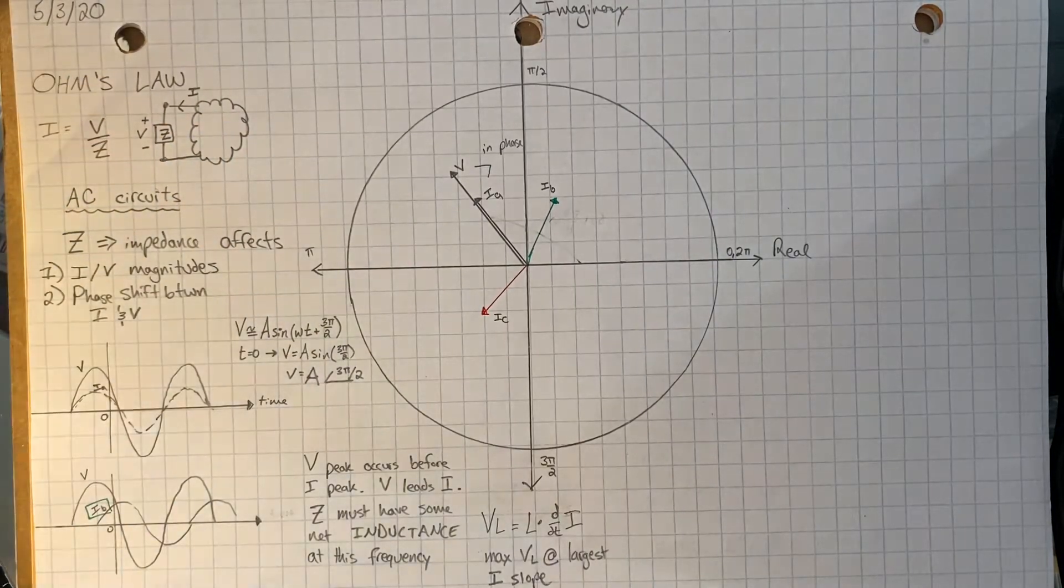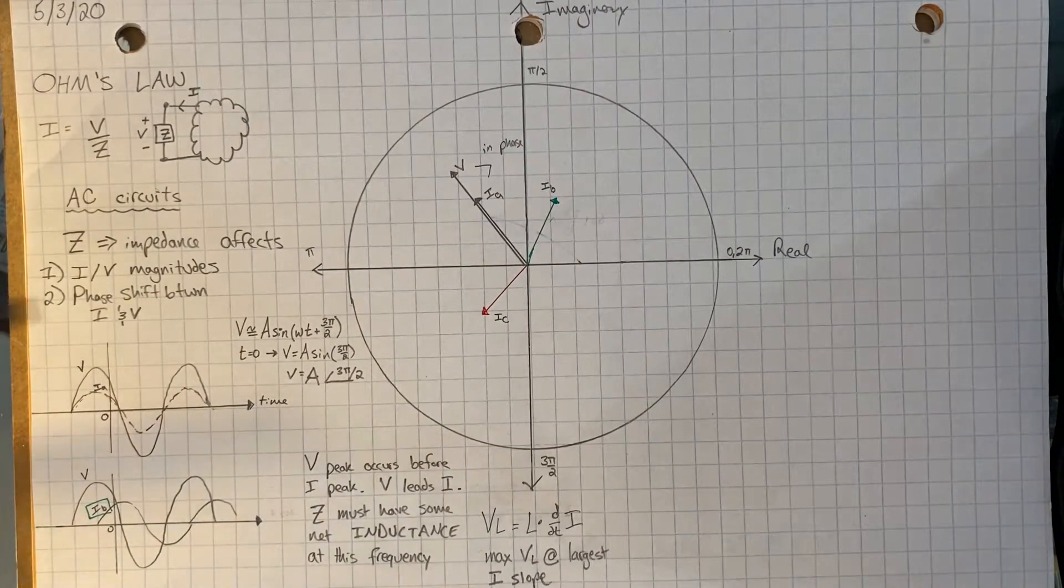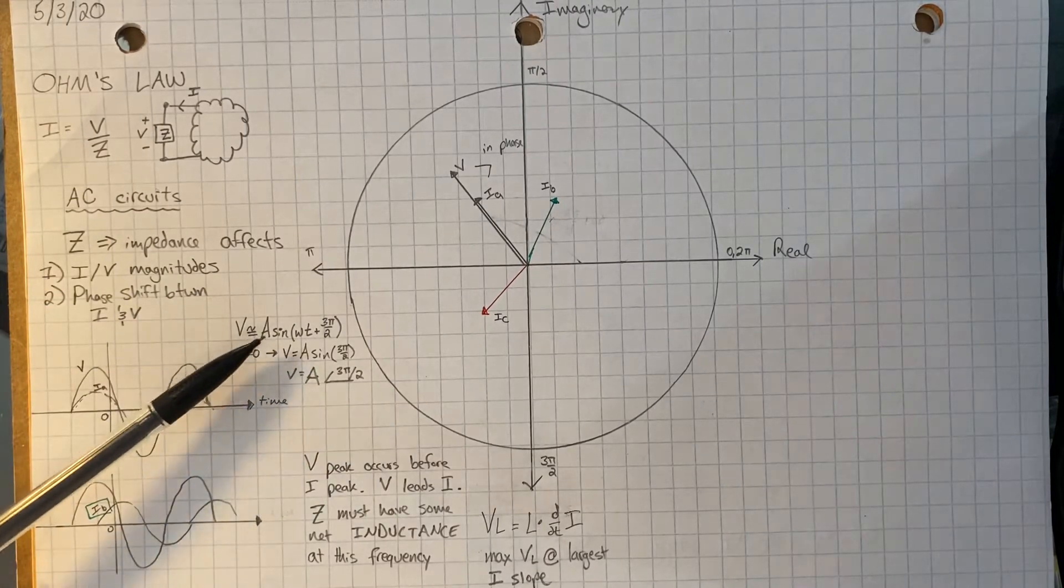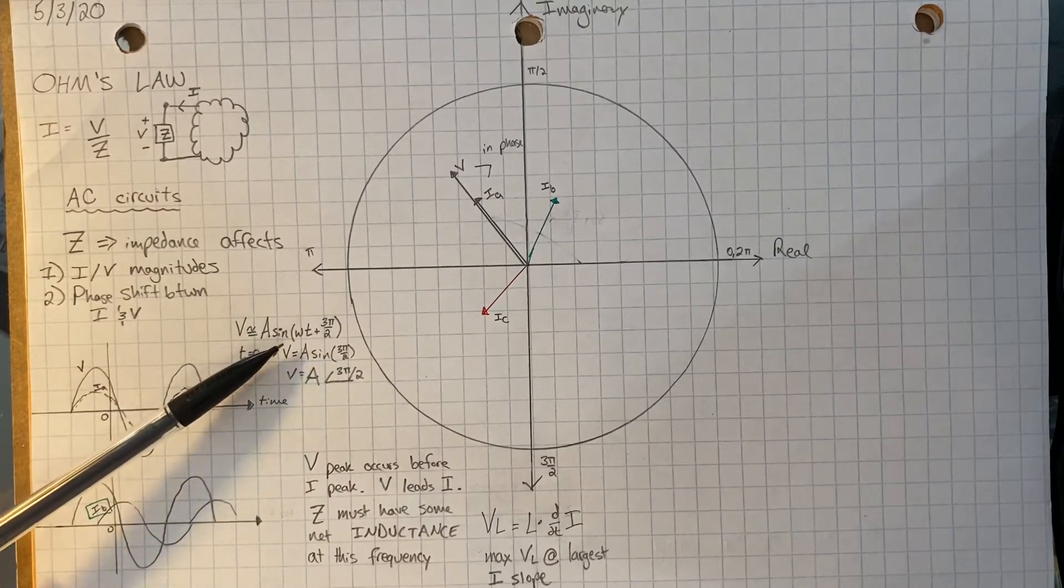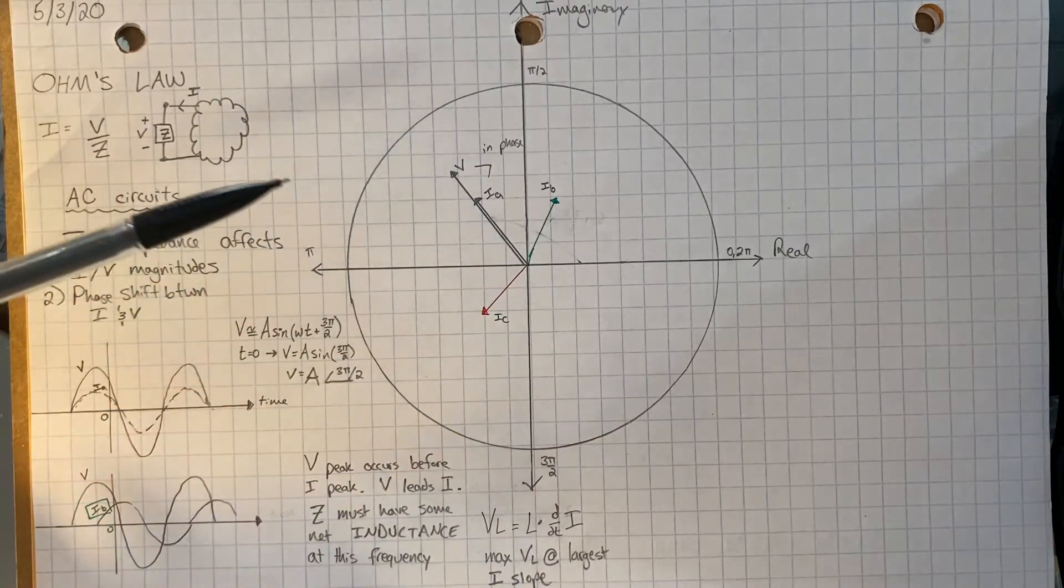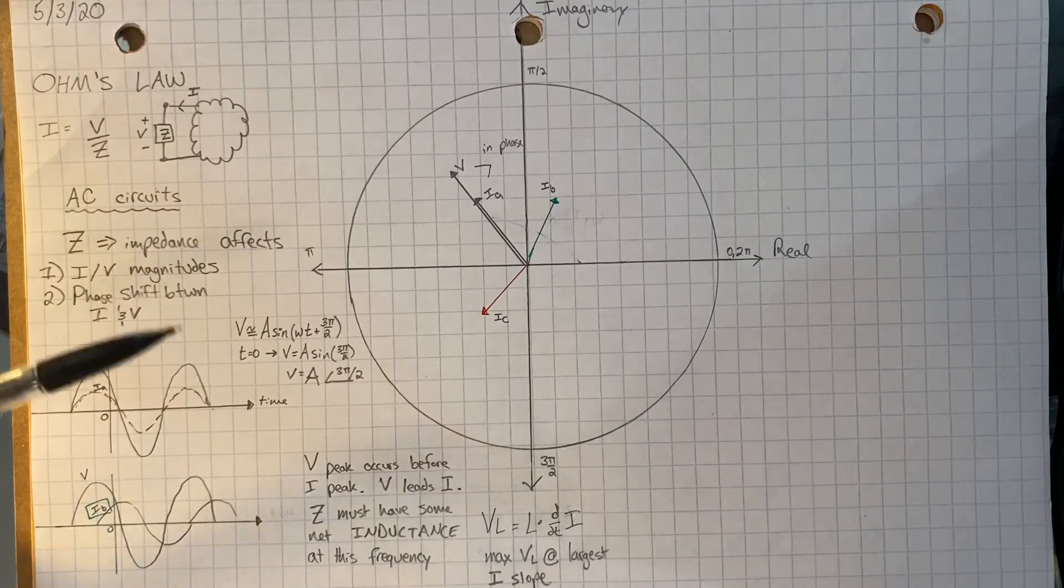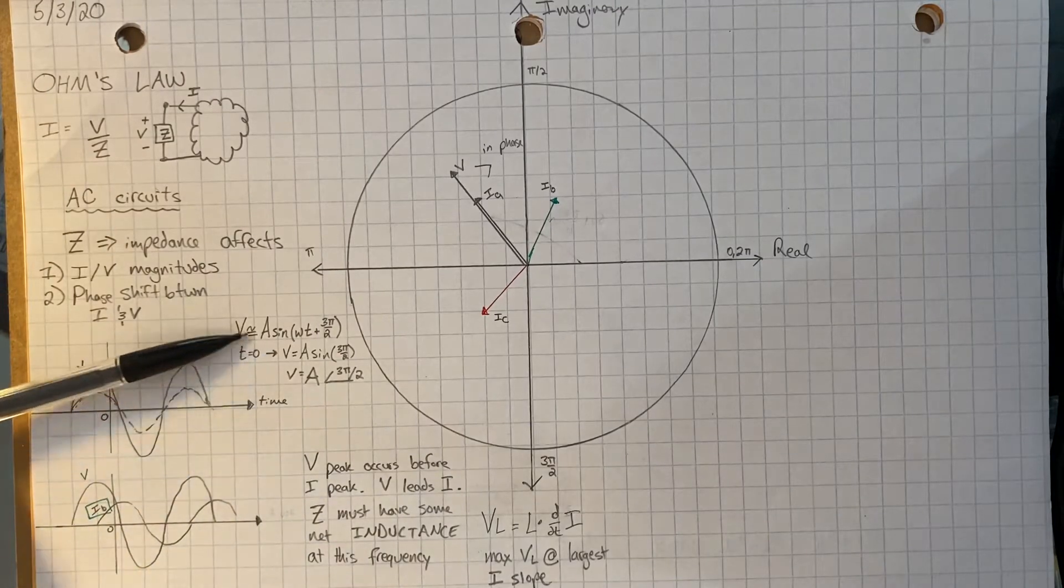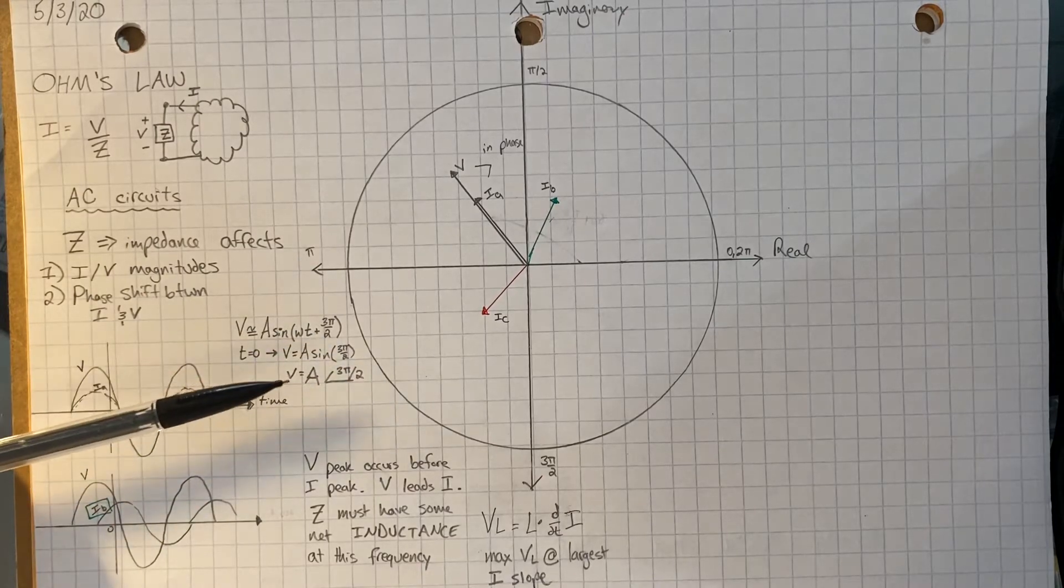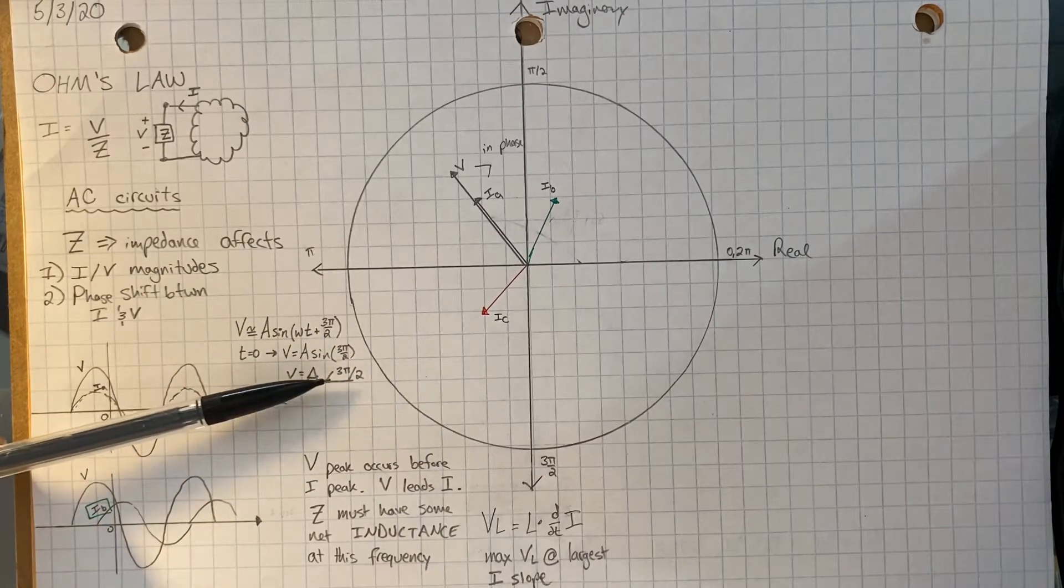For AC circuits, where we treat voltages and currents as phasors which have an amplitude and a phase, notice that we don't really care about the frequency when writing the phasors because we assume all frequencies in the circuit are constant. So if we have a voltage of some amplitude that's a sinusoid with some frequency and a phase, we can simplify that to just an amplitude and a phase.